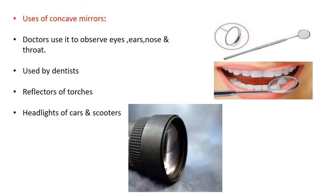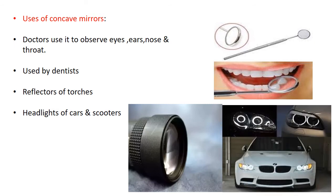Similarly, in the reflectors of torches, the bulb of the torch is very small but the light covers a large distance. Similarly, the headlights of cars and scooters — the bulb is small but the area it covers is large. This is because of the use of concave mirrors. The images may be real or virtual, and their size is larger.